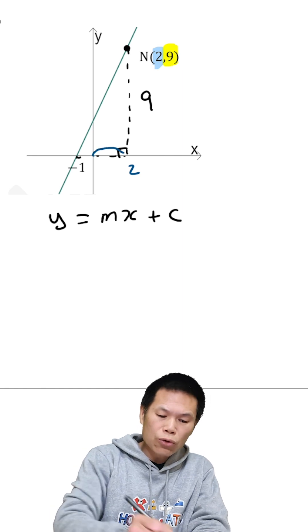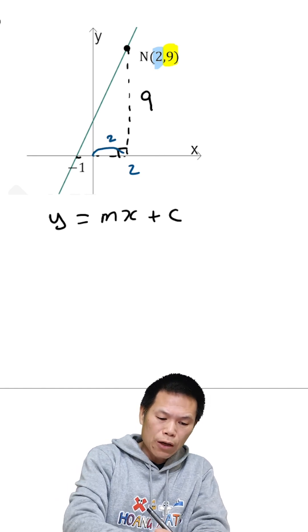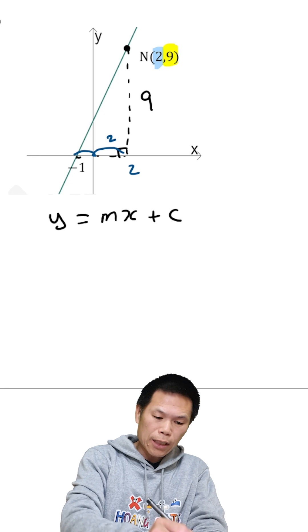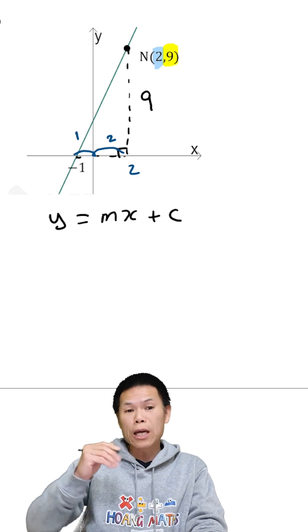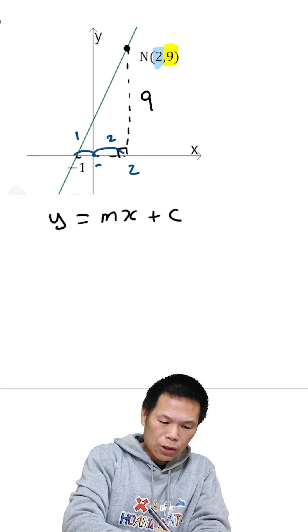So from 0 to 2 is 2 units. From 0 to negative 1 is another unit. So all together is 3 units. So this is 3.